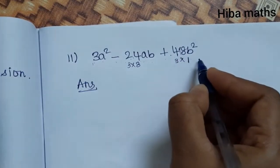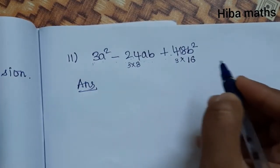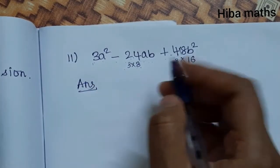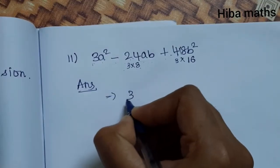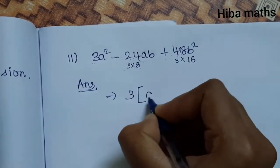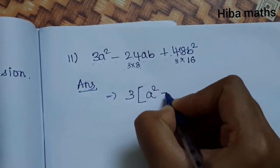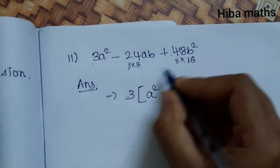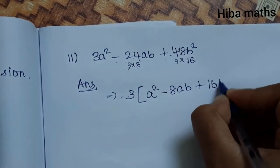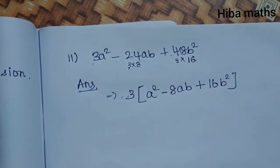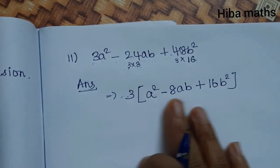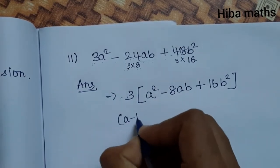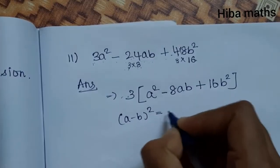We take out 3 as a common factor, giving us 3(a² - 8ab + 16b²). Now we apply the (a-b) whole square formula to the bracket. We recognize that a² is a squared, 16b² is (4b)², and 8ab equals 2·a·4b, confirming the (a-b)² pattern.